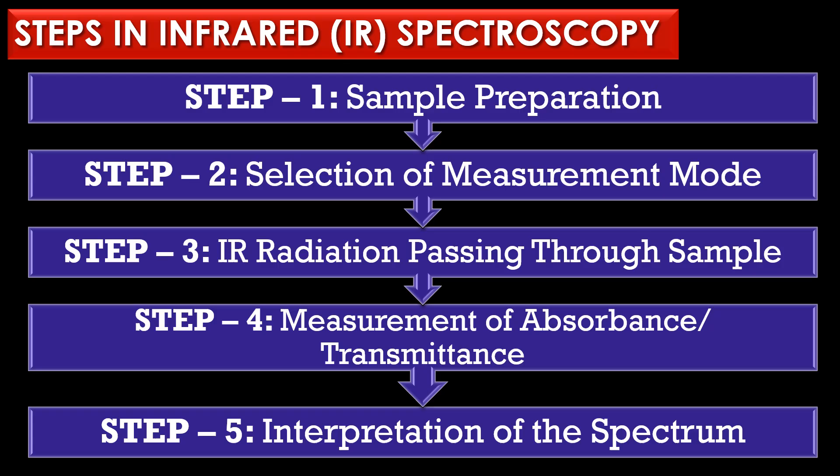There are five steps in IR spectroscopy. Step one is sample preparation. Depending on the physical state of the sample: solid samples may be prepared as thin films, pressed into pellets with potassium bromide, or applied as mulls or a suspension in oil. Liquid samples are often placed between sodium chloride or potassium bromide plates, which are transparent to IR radiation. Gaseous samples are analyzed in a gas cell with a longer path length.